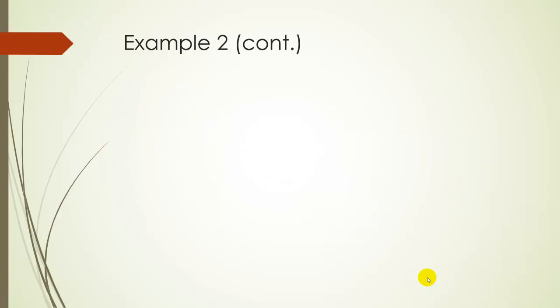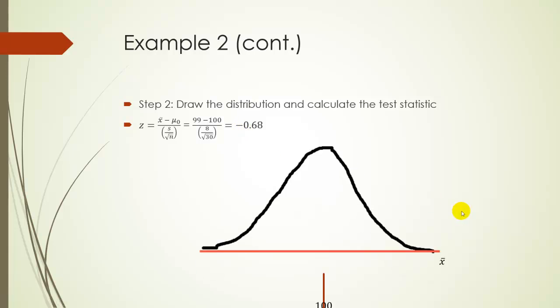Okay, so next we're going to draw a curve and calculate our test statistic. So again, using the same formula as before, our sample average was 99 subtracted from 100, divided by S over square root of N, so 8 over square root of 30. So again, just be very careful when you enter this into your calculator, and you get a Z of negative 0.68. Let's draw a curve. Again, we're drawing this as if HO is true, so centered around 100. Our Z values are below it, and our test statistic is going to be somewhere over here on the left, to the left of 0. So, right, our sample average is 99. Our test statistic associated with that is negative 0.68.